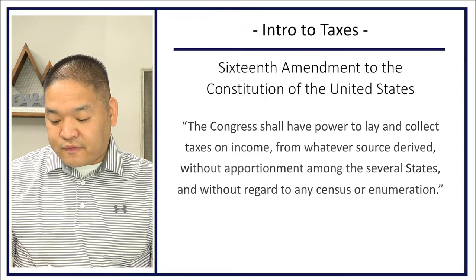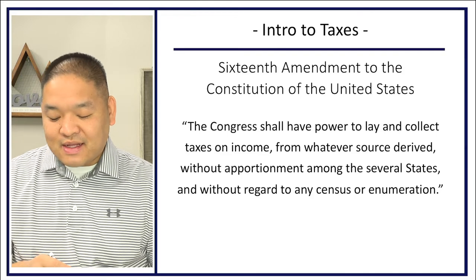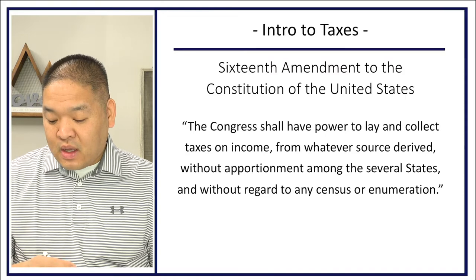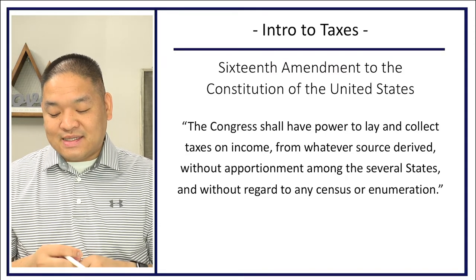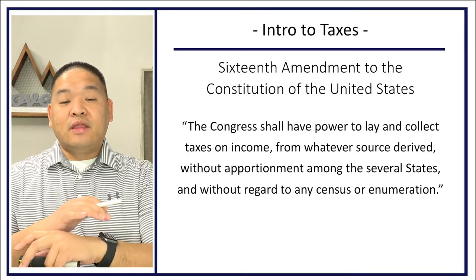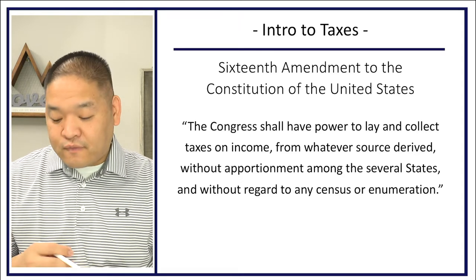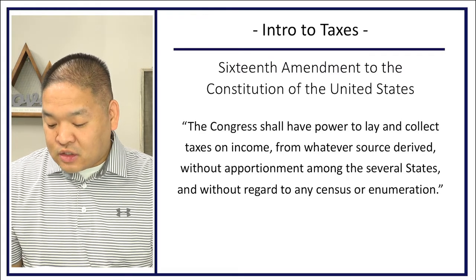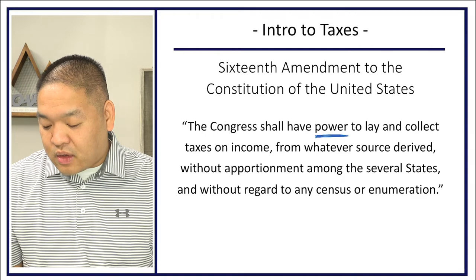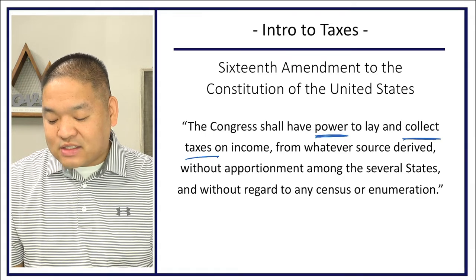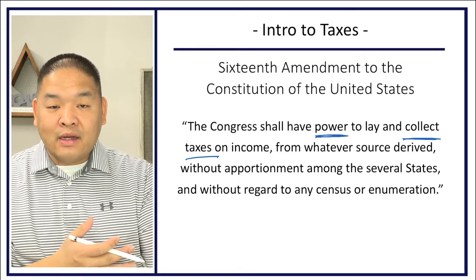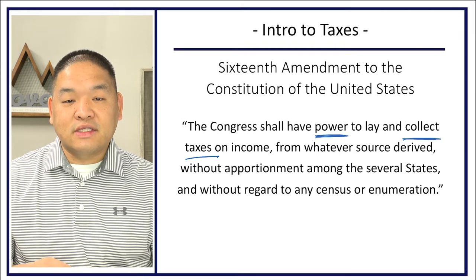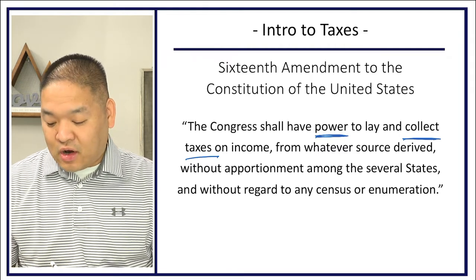Here we have the 16th Amendment right in front of us. It says that Congress shall have the power to lay and collect taxes on income from whatever source is derived, without apportionment among the several states and without regard to any census or enumeration. There is a lot in this sentence. So 'power to collect taxes on income' basically says that Congress can collect taxes on income — and obviously, Congress has used that power because we are paying taxes on our income.